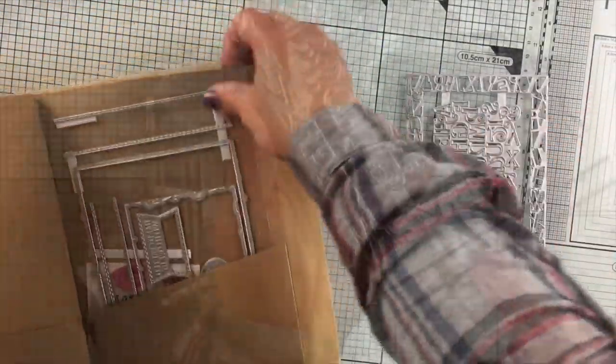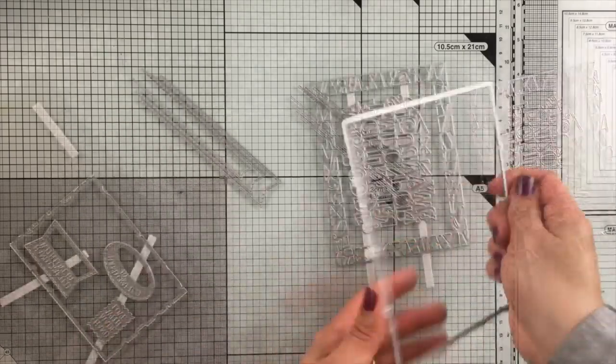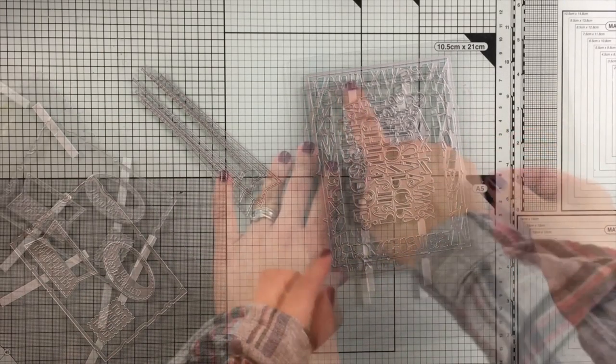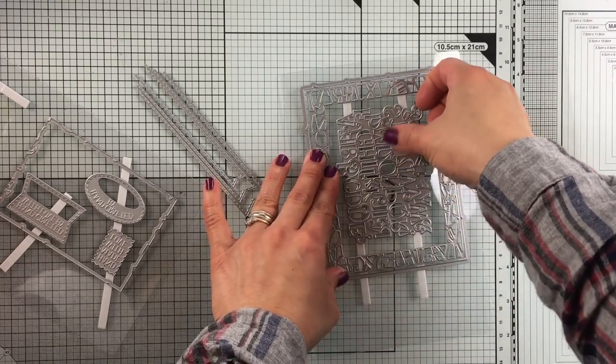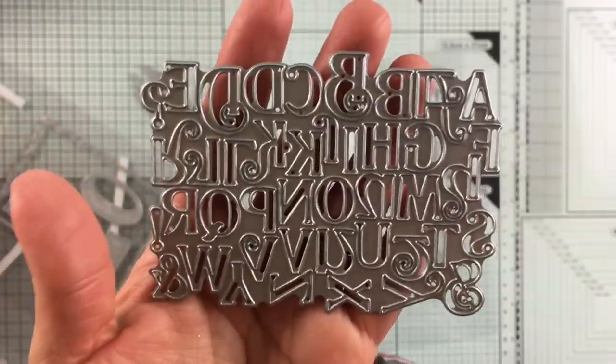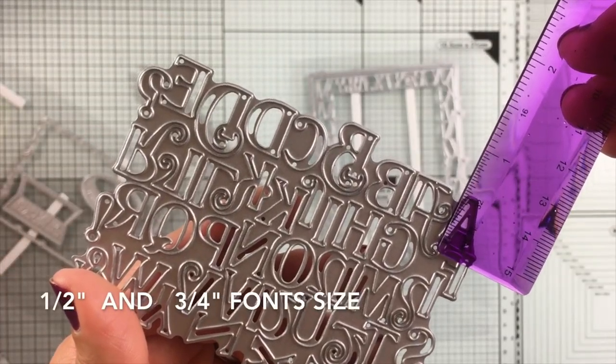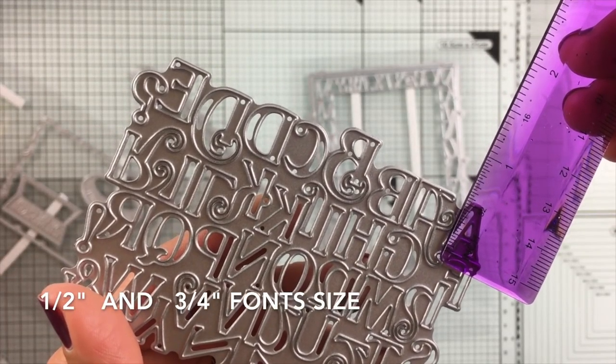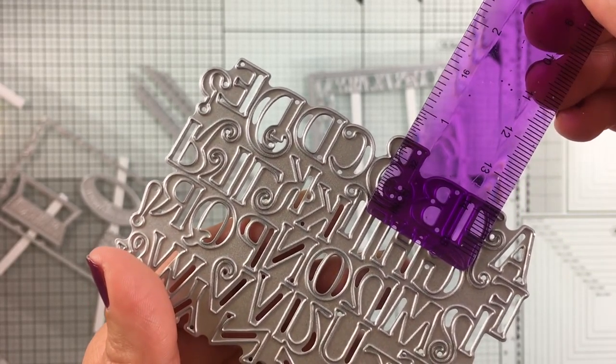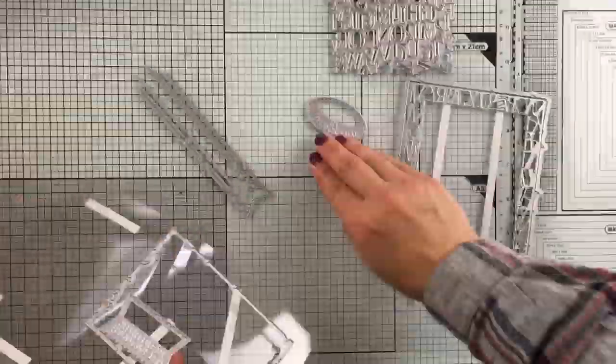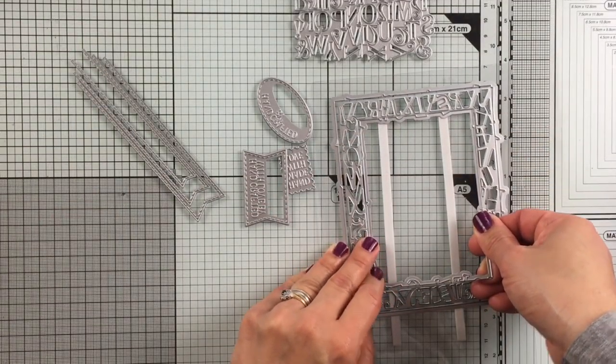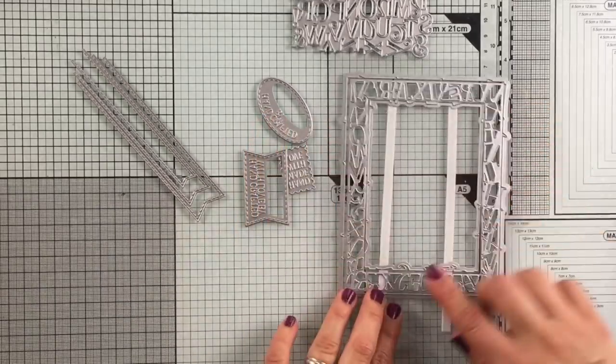They have a stitched pattern all around the edge. You also get these frames, and one of the larger frames has an alphabet pattern. You'll find these alphabet dies with two different fonts—one measures half inch and the other three quarters of an inch. You'll also find these three tags in the set and an inner die to die cut at the center of that frame.